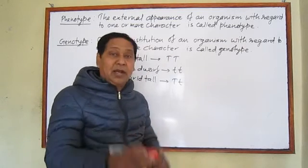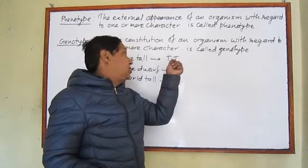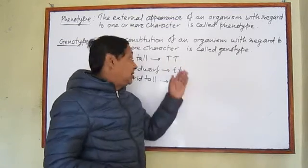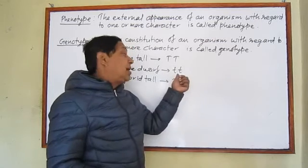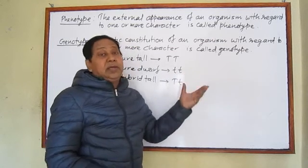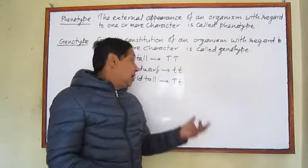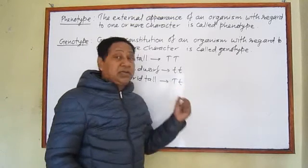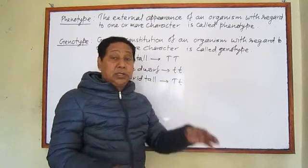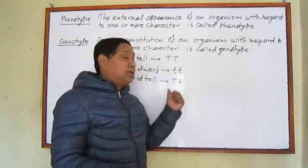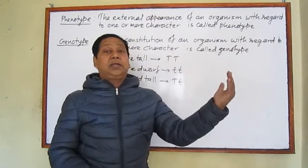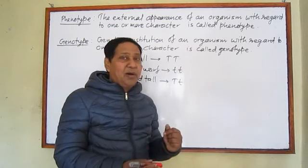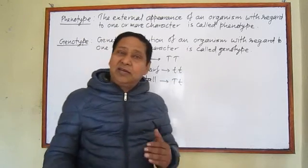Phenotype is actually determined by genotype. If the genotype is pure tall, then phenotypically it appears tall. If the genotype is pure dwarf, both genes carry dwarfness, so phenotypically it is dwarf. If the gene is capital T small t, the dominant character — tallness — appears, so phenotypically it is tall, but the genotype is different: it carries both the character of tallness and dwarfness.